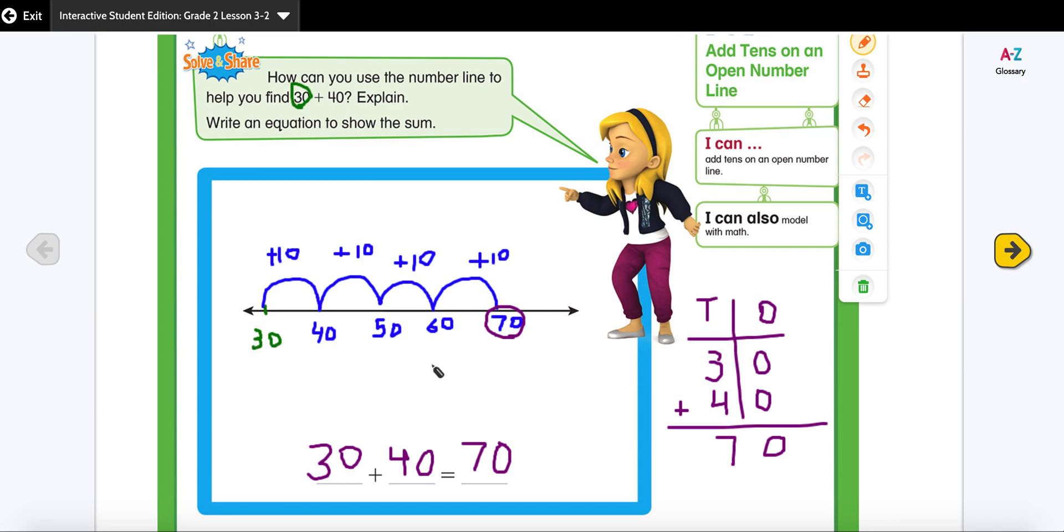This is the strategy to use the open number line to add tens. This is the standard algorithm method to recheck my work. Now I have rechecked my work and I have used another strategy. So that means my work here is done and I have also written my equation to show the sum.